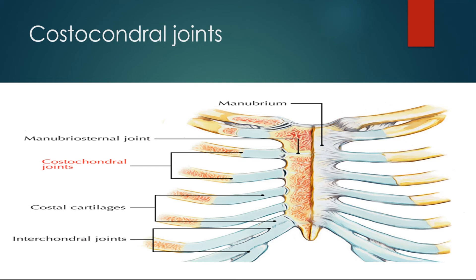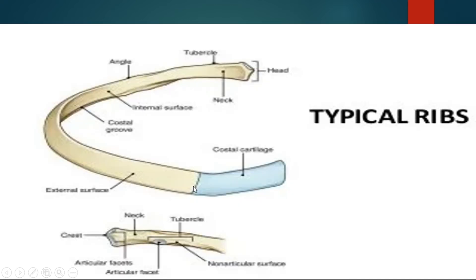Next are the costochondral joints, which are between the ribs and the costal cartilage that attaches them to the sternum. They are cartilaginous joints and offer very little movement. The costal cartilage is hyaline cartilage. Each rib has a cup-shaped depression that articulates with the costal cartilage.